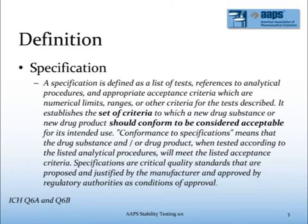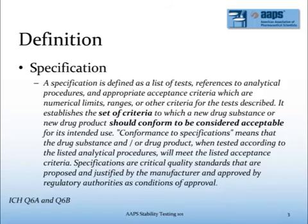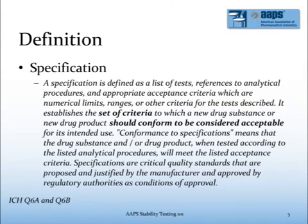We'll begin with a definition. A specification is essentially a set of criteria that's established for a material or product which must be met in order for it to be considered acceptable for use. When the criteria are met, the material or product conforms to specifications and the results are considered to be in specification.